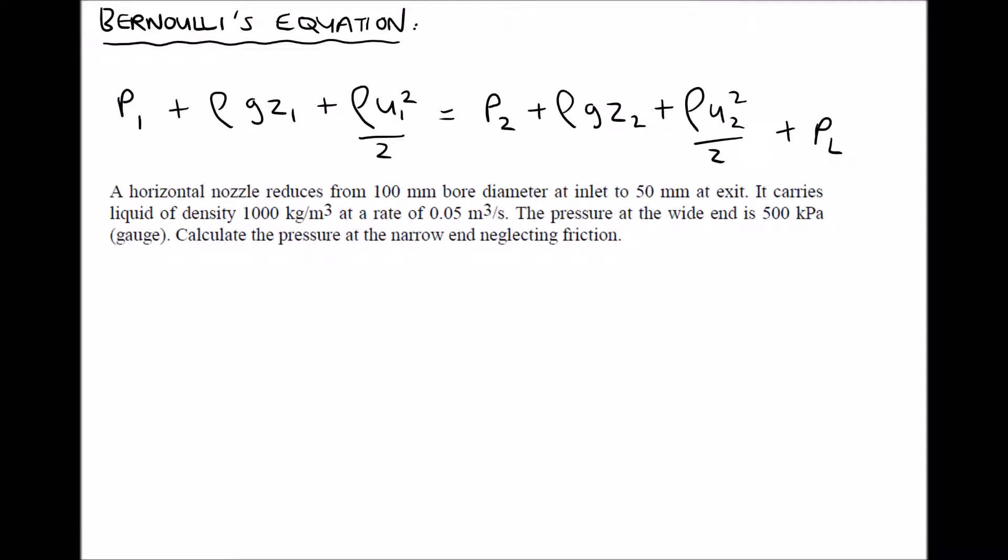This particular example has been borrowed from freestudy.co.uk and relates to a horizontal nozzle carrying fluid of density 1000 kilograms per meter cubed. As we read the question, we want to extract as much information as possible. It tells us that a horizontal nozzle reduces from 100 mm bore diameter at the inlet to 50 mm bore at the exit. So the first useful piece of information is that this is horizontal, so there's not going to be any elevation at either position 1 or position 2, and it reduces in diameter.